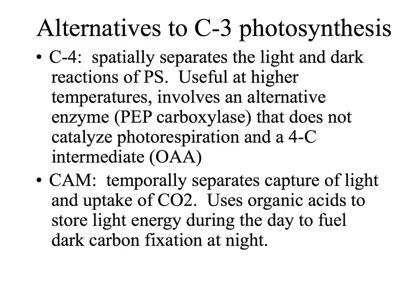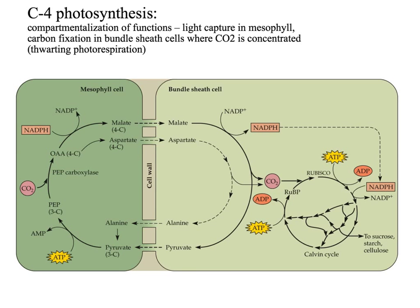In CAM photosynthesis, organic acids are used to store light energy during the day, and then at night that energy fixes carbon into sugars. In C4 photosynthesis, light is captured in the mesophyll cells and carbon is fixed in the bundle sheath cells, where carbon dioxide is concentrated, and therefore photorespiration is avoided.